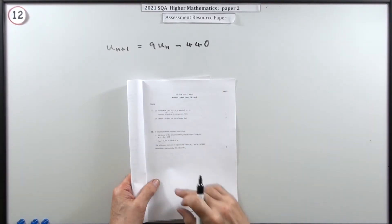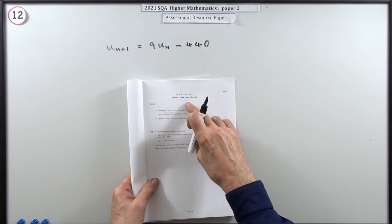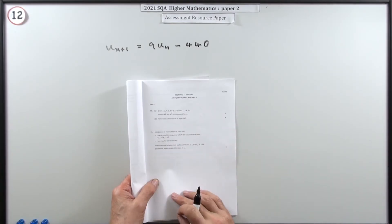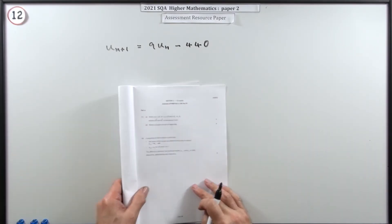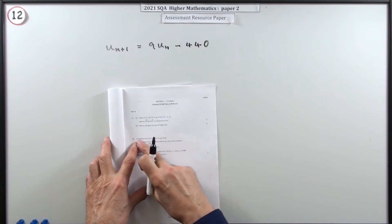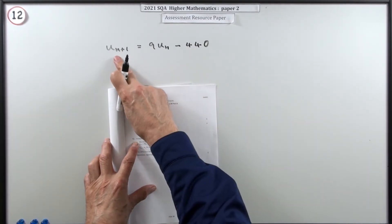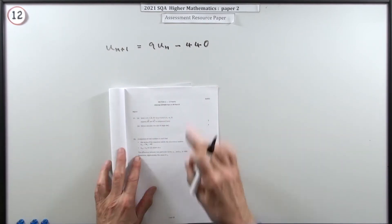Number 12 from paper 2, the 2021 Higher Math resource paper part A, the one with vectors and recurrence relations. So here's the recurrence relations. It says a sequence of real numbers is such that there's the recurrence relation that generates the following term if you know any particular term.